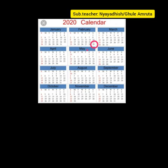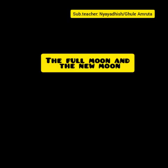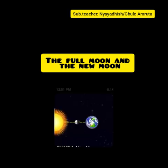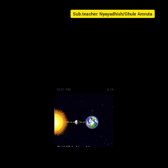You know that the length of the day and night is not always equal. This happens because of the Earth's inclined axis and its revolution around the sun. In the northern hemisphere, between 22 March and 23 September, the days are longer than the night.